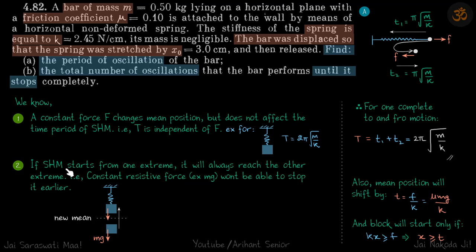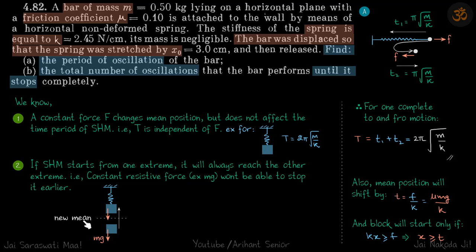For the second part, consider that if SHM starts from one extreme with a constant force — for example, pulling a block down and releasing it with constant force mg — the new mean position shifts to where mg equals kx₀. Once the SHM starts from one extreme, it will definitely reach the other extreme. The constant resistive force cannot stop it mid-cycle, so it will always complete at least a half cycle.